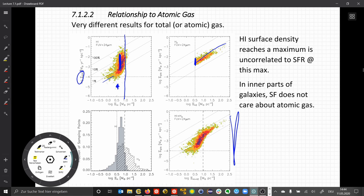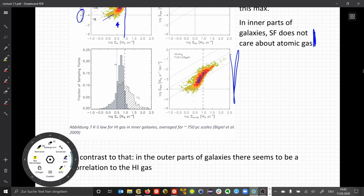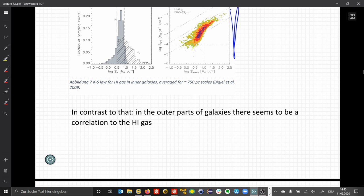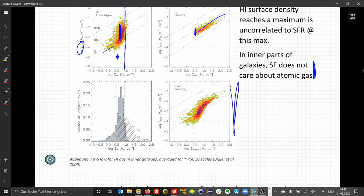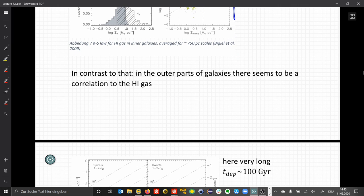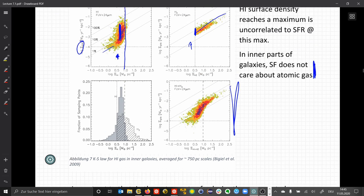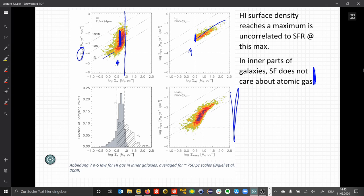Most of the molecular gas is in inner galaxies, where we find very little atomic gas, and here star formation does not care about the atomic gas at all. In contrast, when we move to the outer parts where we have no H2 gas at low densities, then we find some correlation of the star formation rate, which has a significantly different slope compared to the molecular gas.